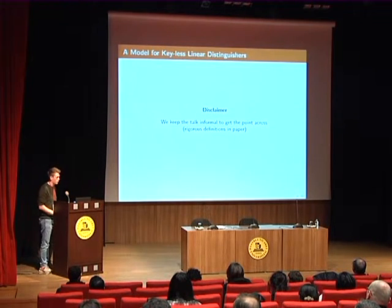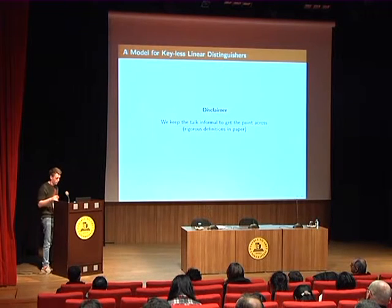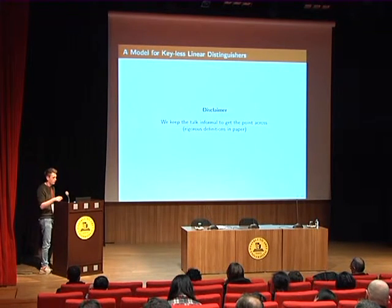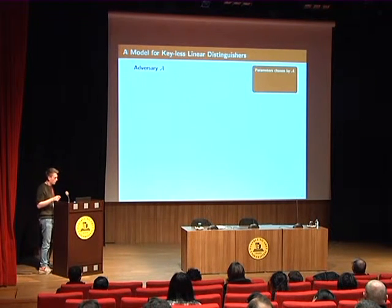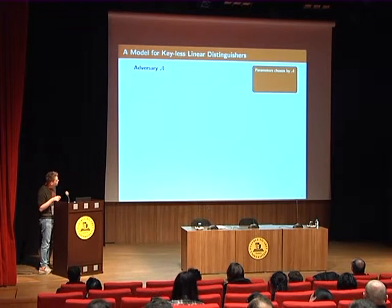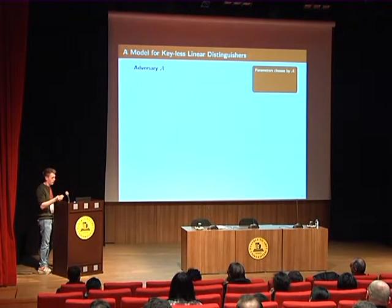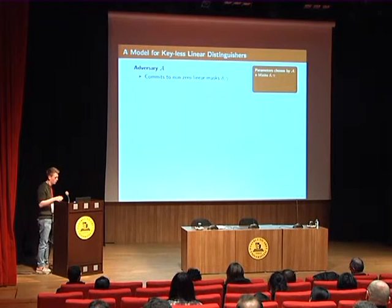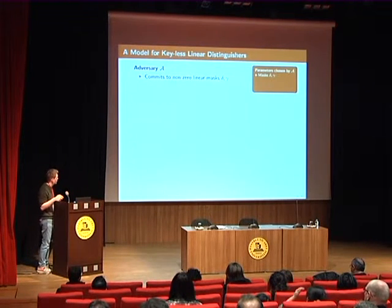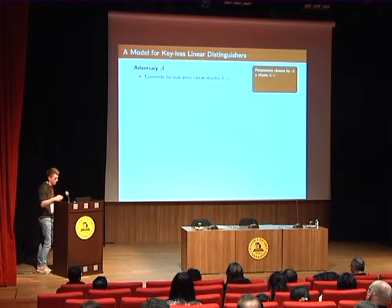I will describe this model, with a disclaimer that I will be somewhat informal here, but rigorous definitions are in the paper. We have an adversary, and in the orange box in the right corner I will place the parameters chosen by the adversary as I proceed. First, the adversary must commit to a particular linear hull for the block cipher. This linear hull comes in the form of an input mask and an output mask, denoted delta and gamma, chosen by the adversary herself.